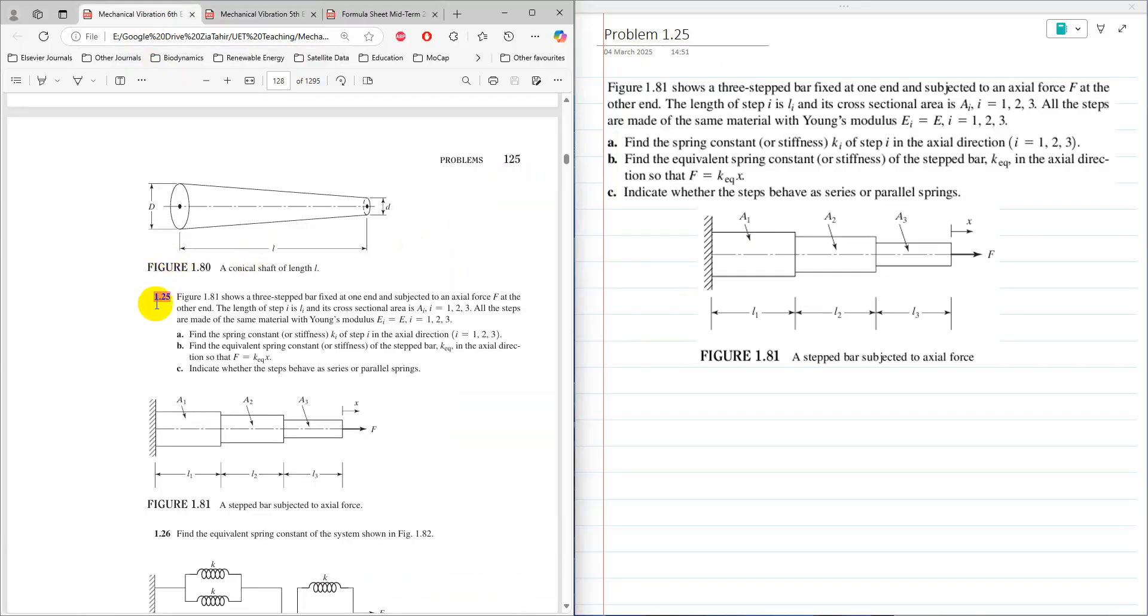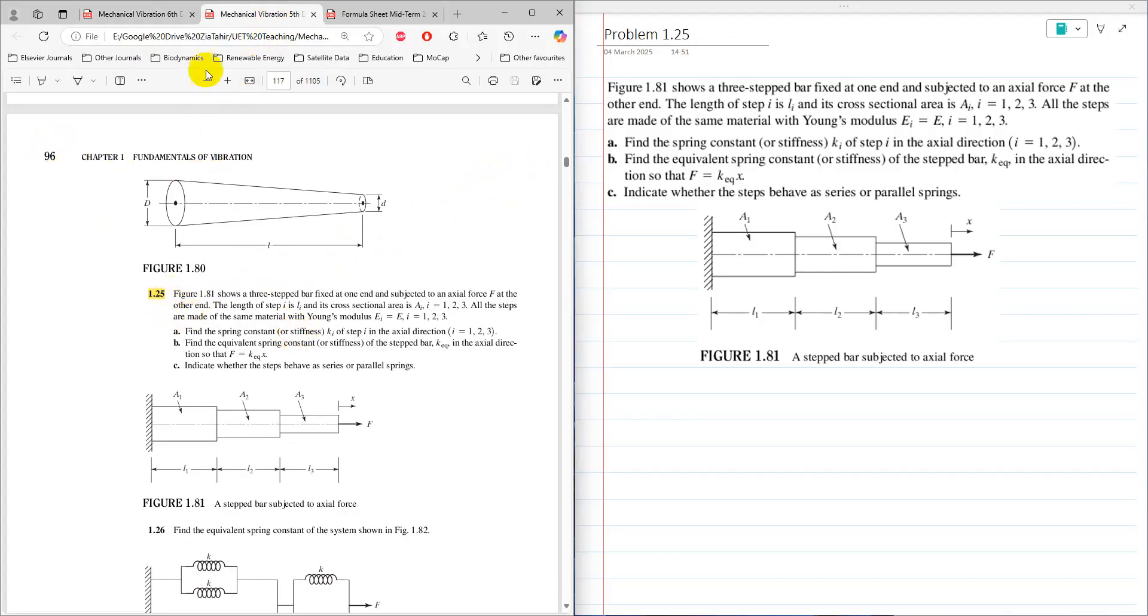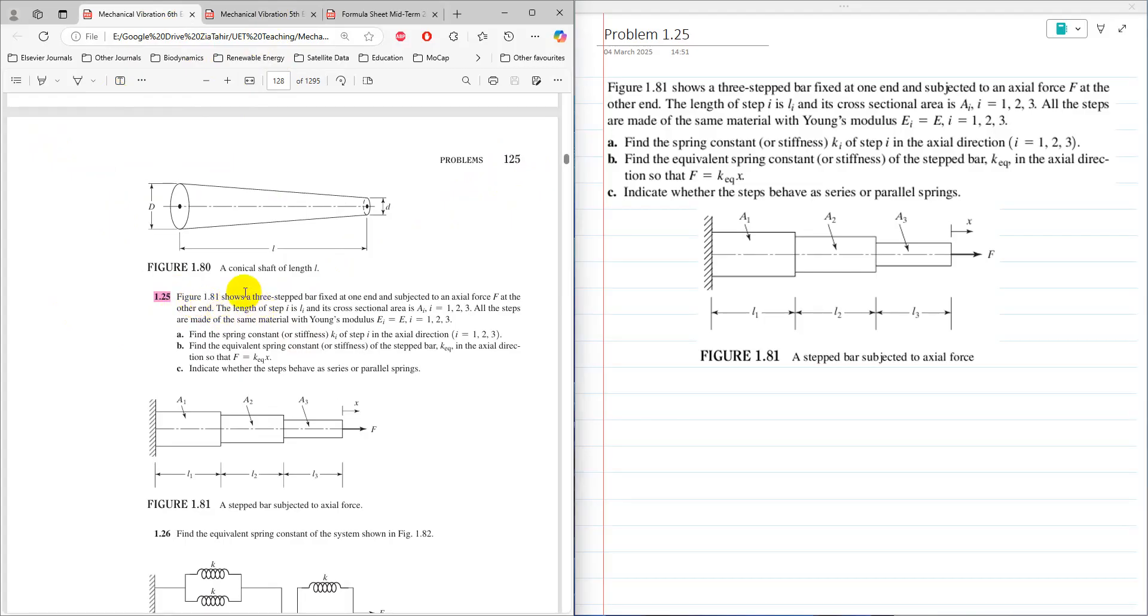Problem 1.25 is at page 125 in 6th edition and at page 96 in 5th edition. This is about finding equivalent spring stiffness of a step bar.